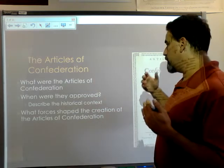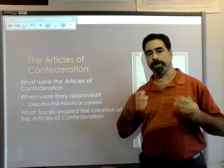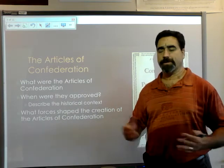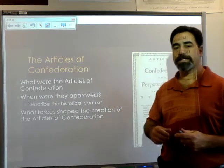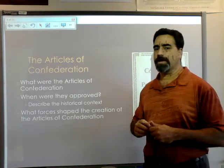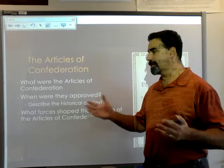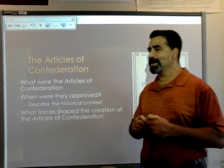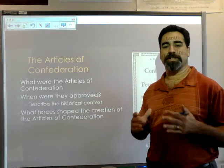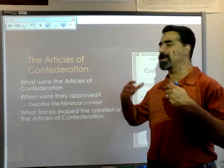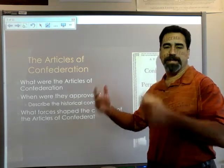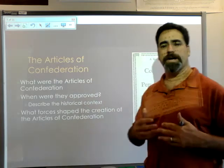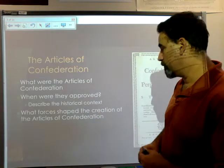The Articles of Confederation are going to be drafted shortly after the Declaration of Independence, and ultimately they're not going to be completely ratified until 1781. But for the most part, the Continental Congress at this stage of the game is going to largely follow the ideas of the Articles of Confederation. So this was going on concurrently with the American Revolution.